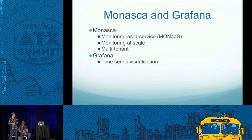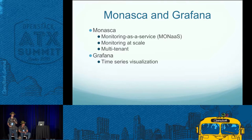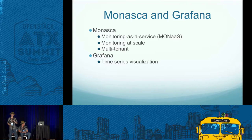For our data collection and displays, we're using a combination of Monasca and Grafana. Monasca is the OpenStack monitoring-as-a-service solution — it's flexible, scalable, and multi-tenant, which means not only can we use this for our own monitoring, but we can provide this information to our customers as well. For visualization we're using Grafana — it's a time series data visualizer, it's open source, and it also supports multi-tenancy so customers can have individualized dashboards.